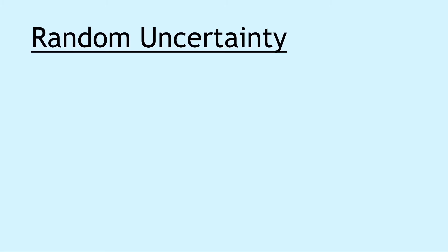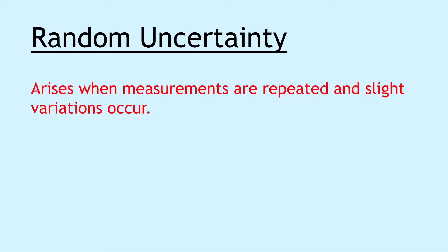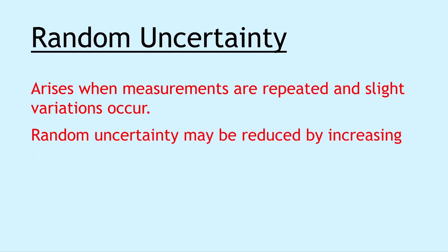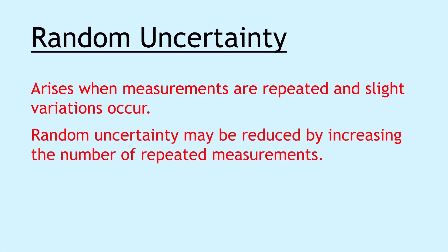Moving on, we have random uncertainty, and random uncertainty arises when measurements are repeated and slight variations occur. Random uncertainty may be reduced by increasing the number of repeated measurements. Remember you've got a relationship on the relationship sheet in the exam for random uncertainty, where you take the maximum reading from a set of results and subtract the minimum reading from the set of results and divide it by the total number of readings.